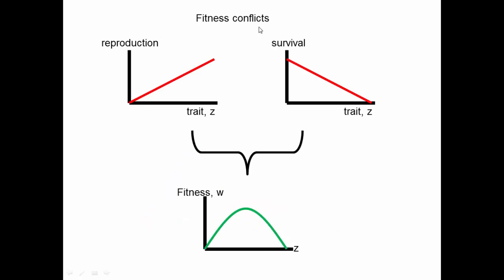We can see conflict between different aspects of fitness. If a trait increases reproduction as it gets larger but reduces survival as it gets larger, and you combine these two and plot total fitness — which is a combination of reproduction and survival — very low values have low fitness because the organism isn't reproducing, and very high values have low fitness because the organism isn't surviving. It's intermediate values of the trait that generate the highest overall fitness, representing these trade-offs in life history.